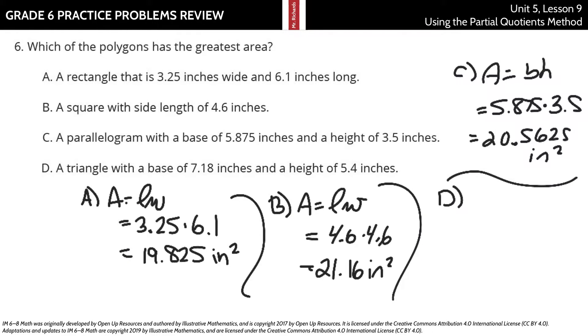And we look at D, a triangle with a base of 7 and 18 hundredths inches and a height of 5 and 4 tenths inches. Now, area is equal to one-half times the base of 7 and 18 hundredths times the height of 5 and 4 tenths. And when you multiply those three numbers together, you get a solution of 19 and 386 thousandths square inches.